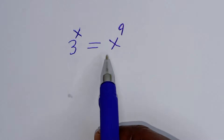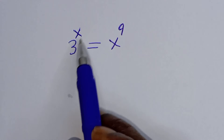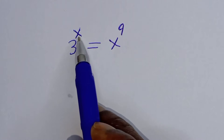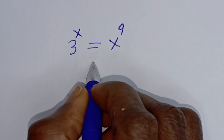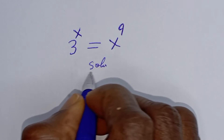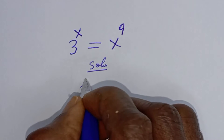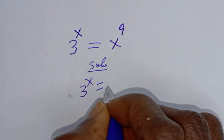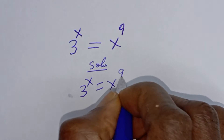Hello. How to solve for s from this given 9 smart Olympiad problem: t raised to power s is equal to s raised to power 9.